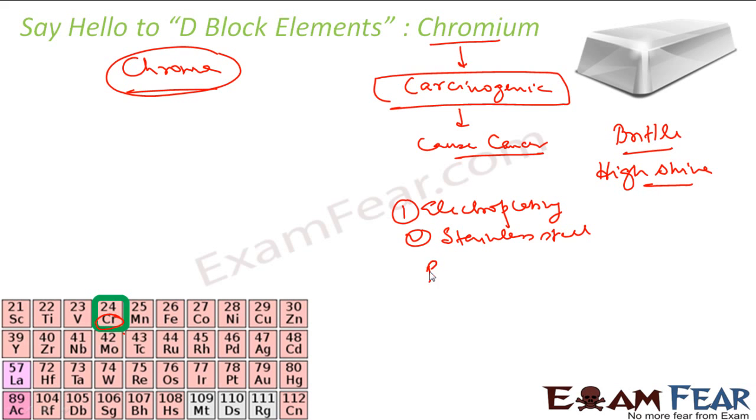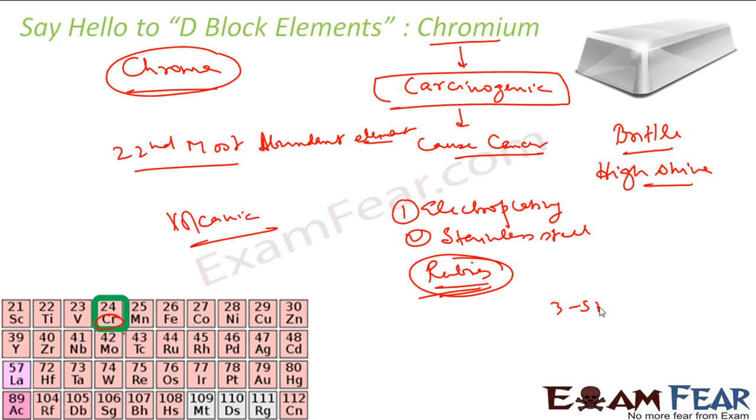And if you talk about rubies, the red color rubies, the color in the rubies is nothing but Chromium. It is because of Chromium that it has that color. And this is the 22nd most abundant element in the Earth crust. So typically you get this element from volcanic eruption. Again, it also has stable and radioactive isotopes. Three stable and 19 radioactive.